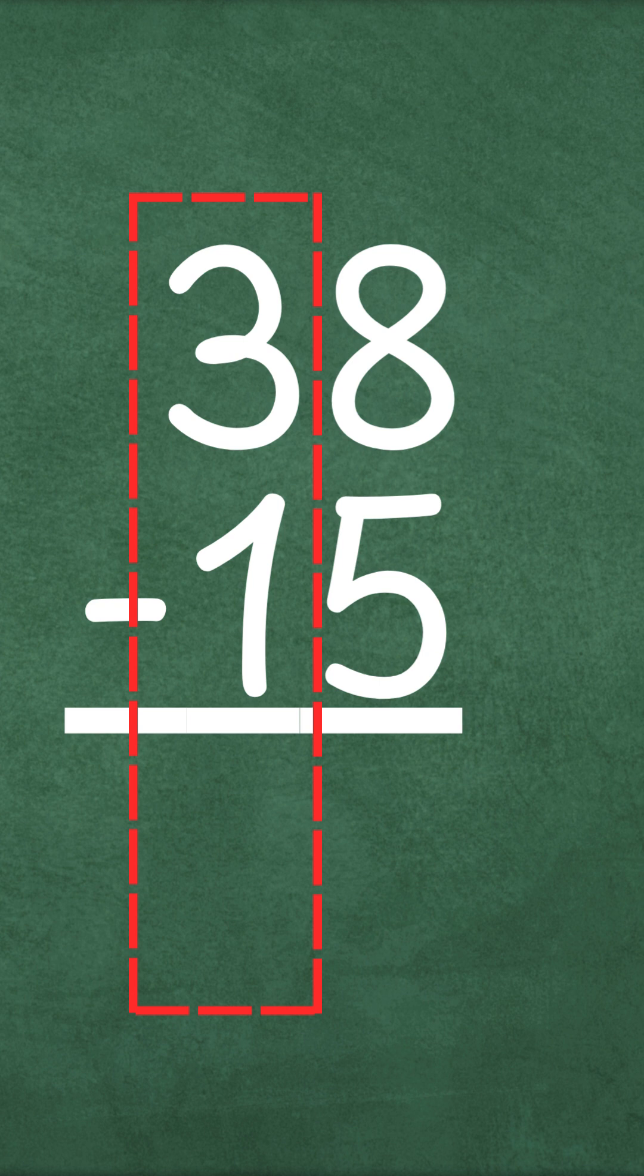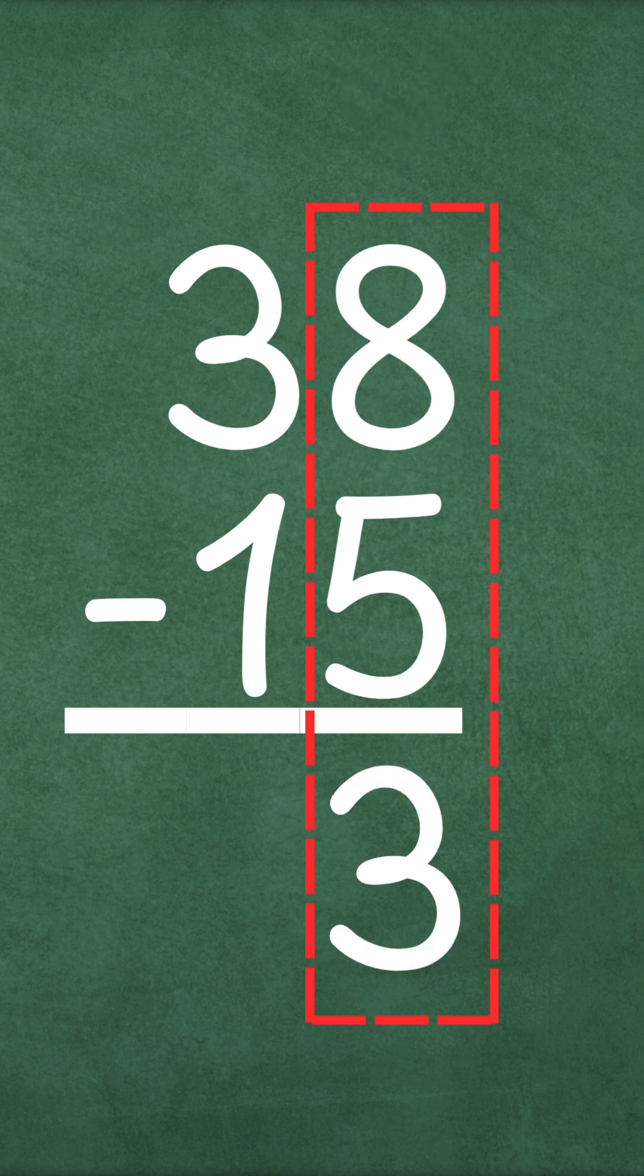Now we can start subtracting. We always start with the ones column. What's 8 minus 5? Yep, 8 minus 5 is 3. Easy peasy.